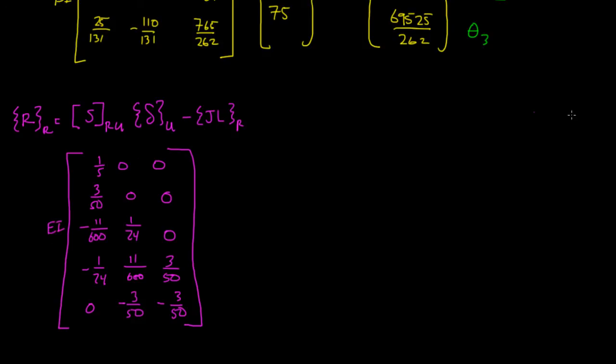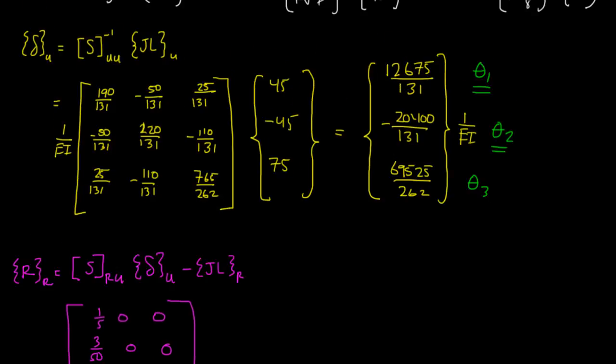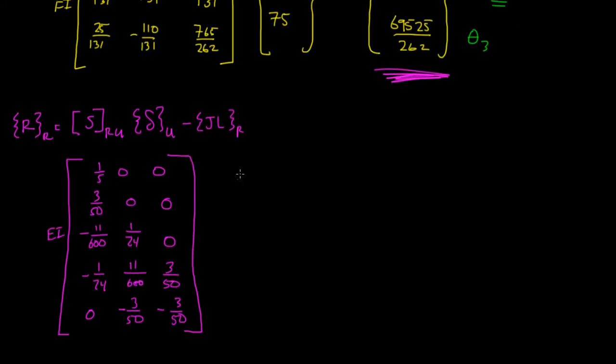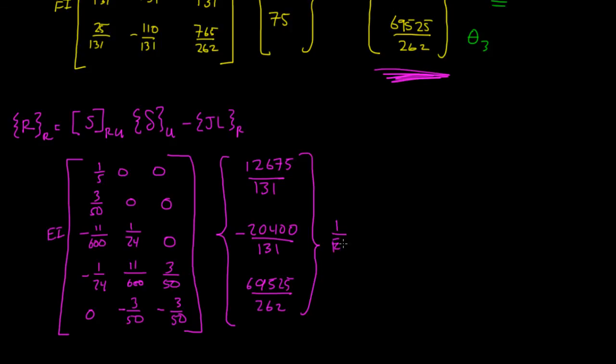Our delta unrestrained is this column vector right here, this one that we calculated just a short while ago. And those numbers are 12,675 over 131, negative 20,400 over 131, and then finally 69,525 over 262. This is 1 over EI.